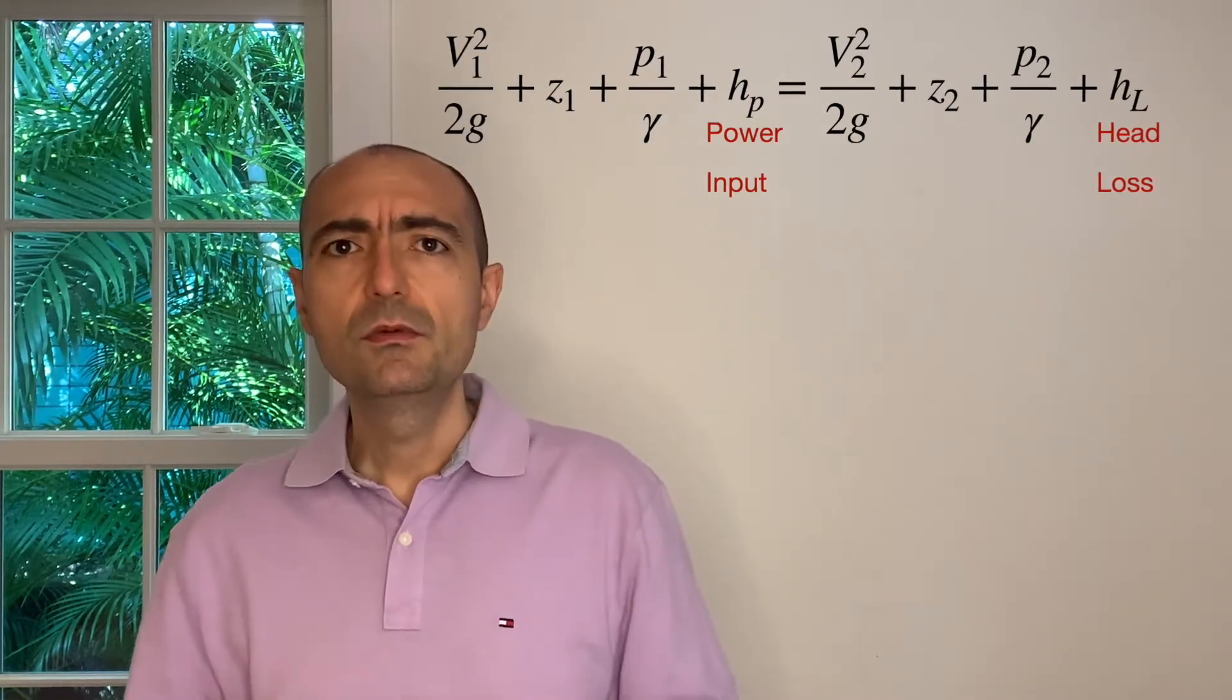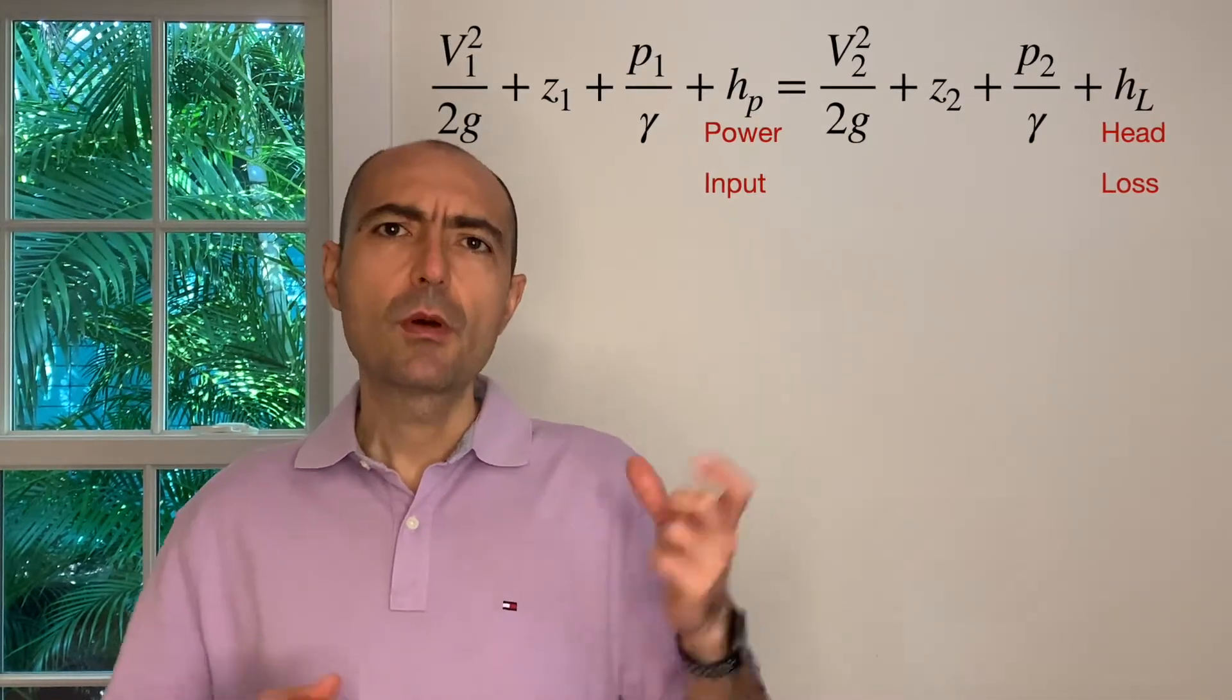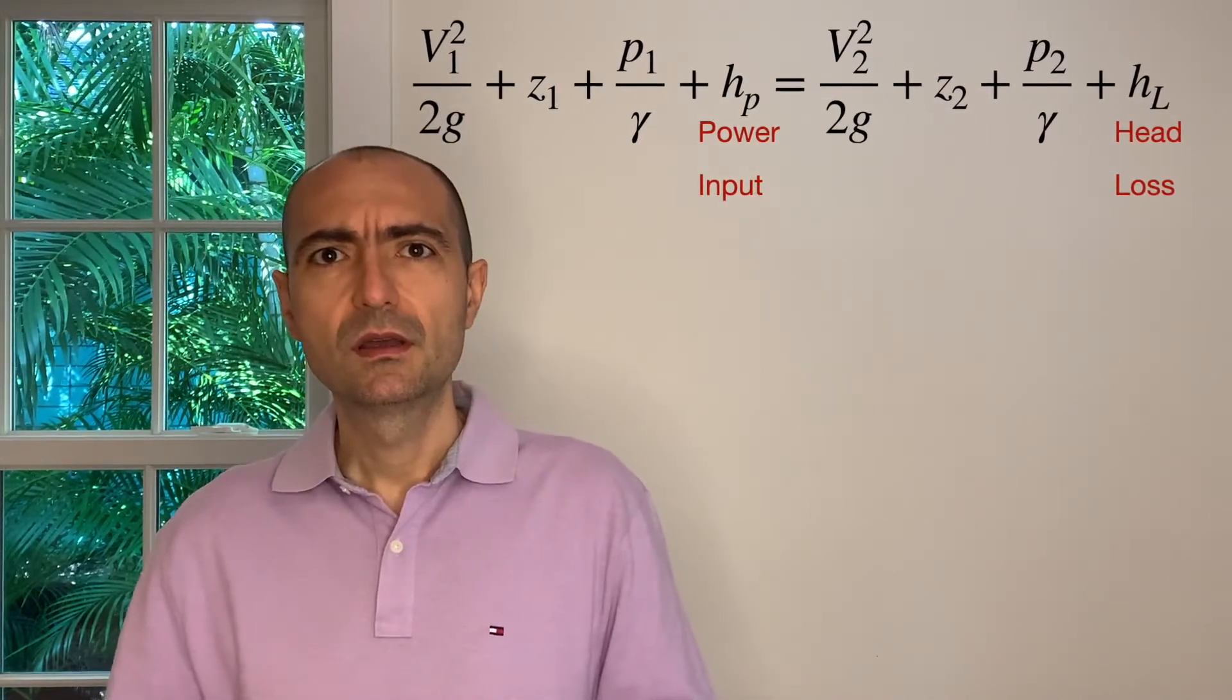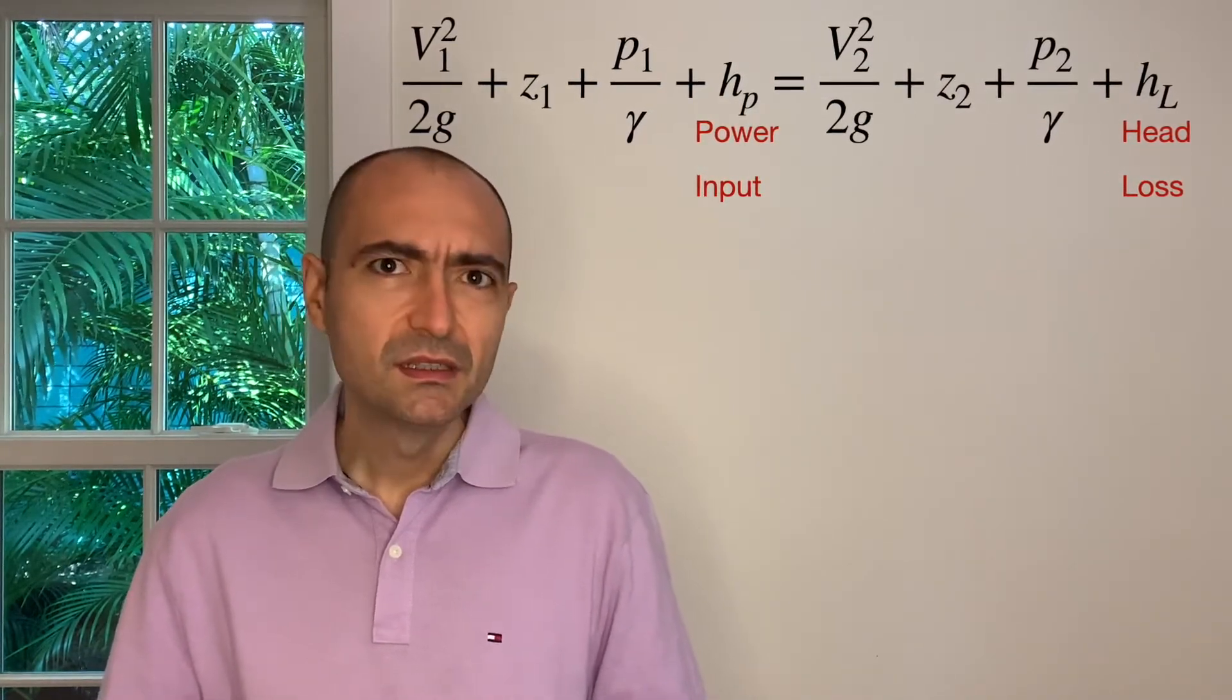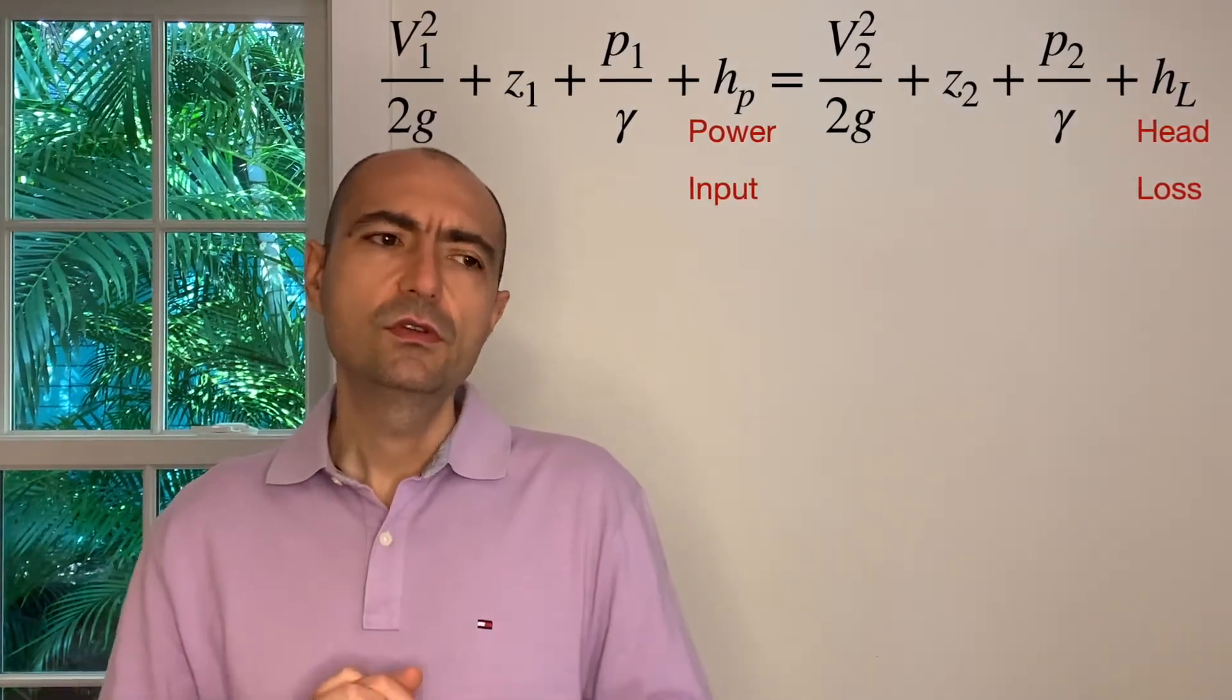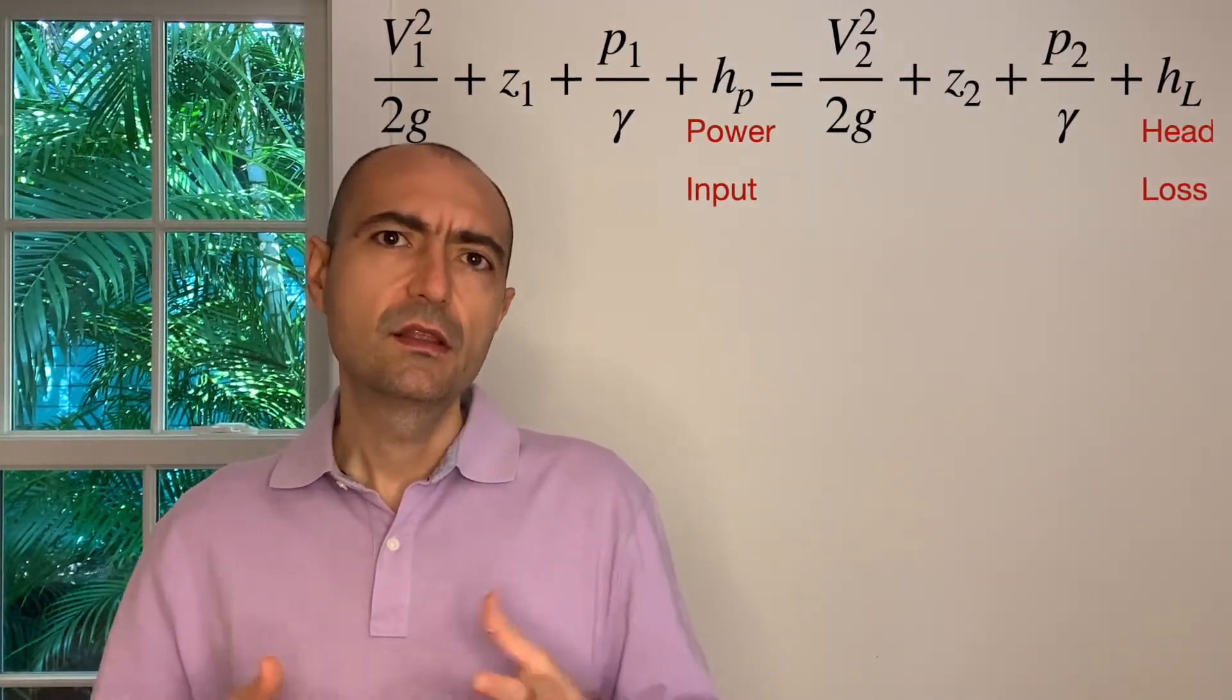Or we showed some other equations that you can use to obtain your f value. Also, what we showed is we modified the Bernoulli's equation, and on the left-hand side, I'll put it up there, we put that input power. But remember, what is the unit of that hp that you see up there? Horsepower? What? No, it's length—careful. And on the right-hand side, we introduce a loss term we call this head loss, hL.